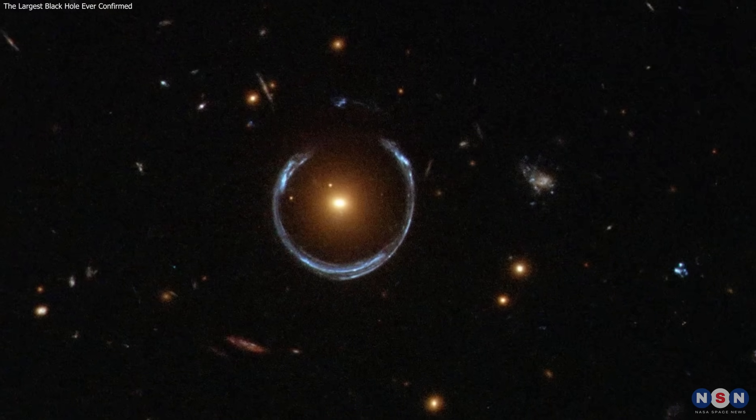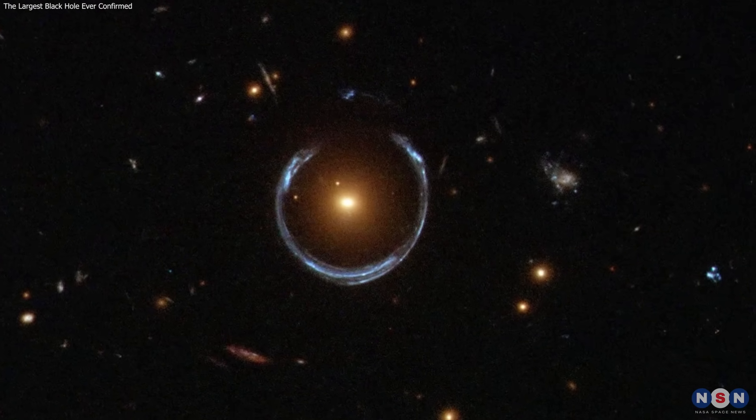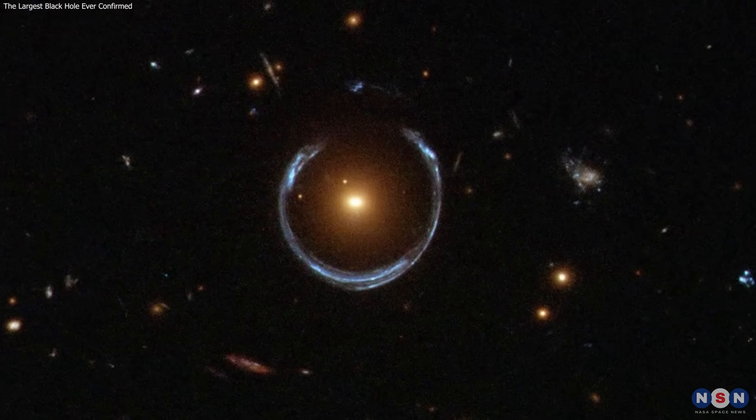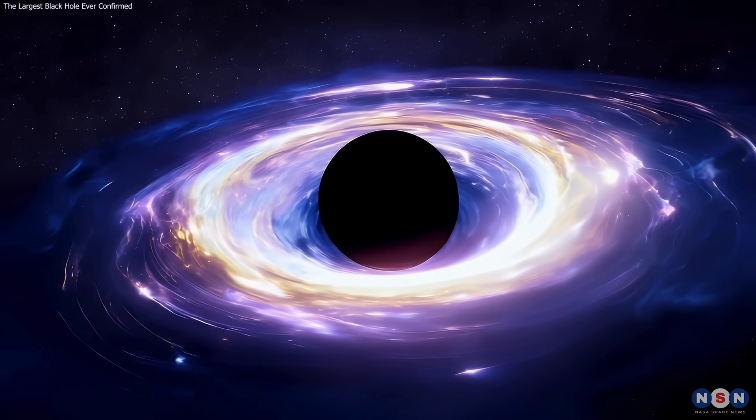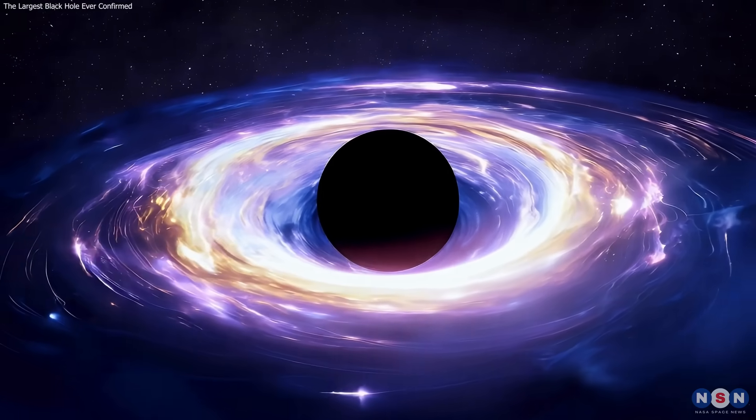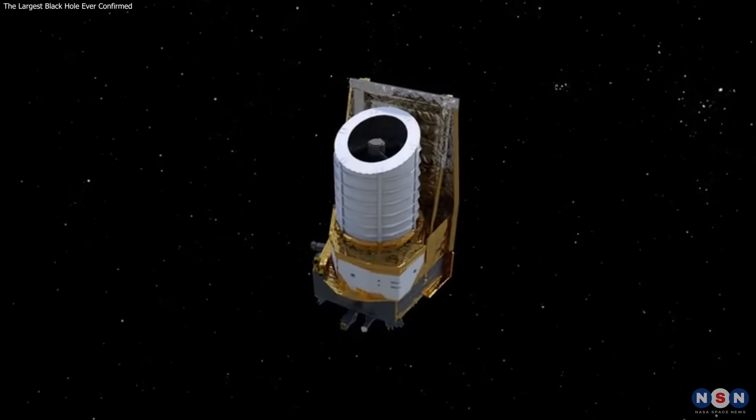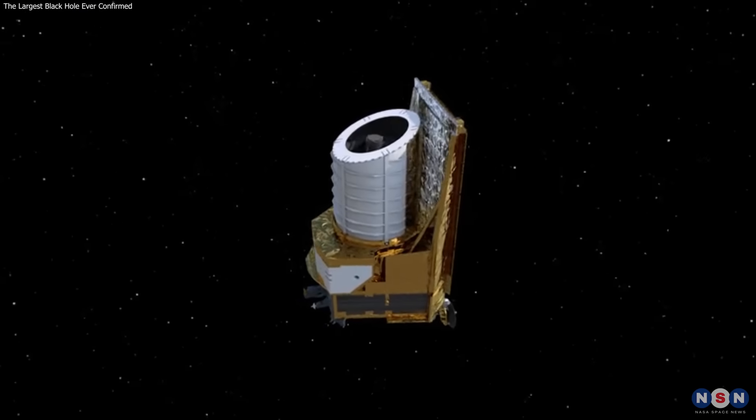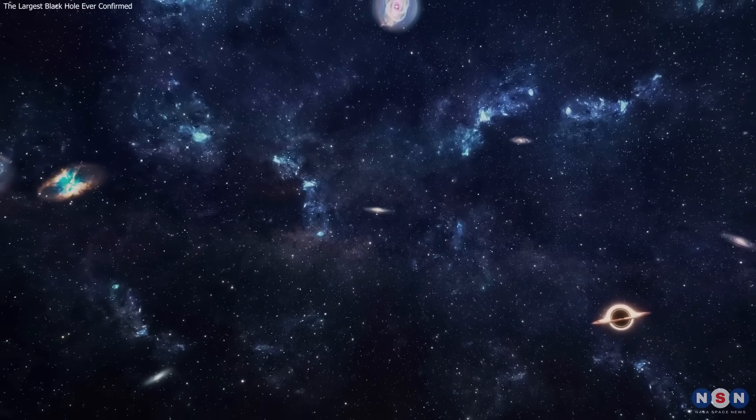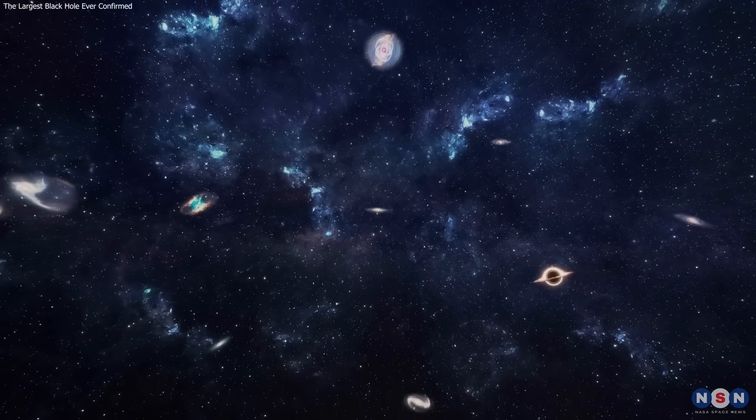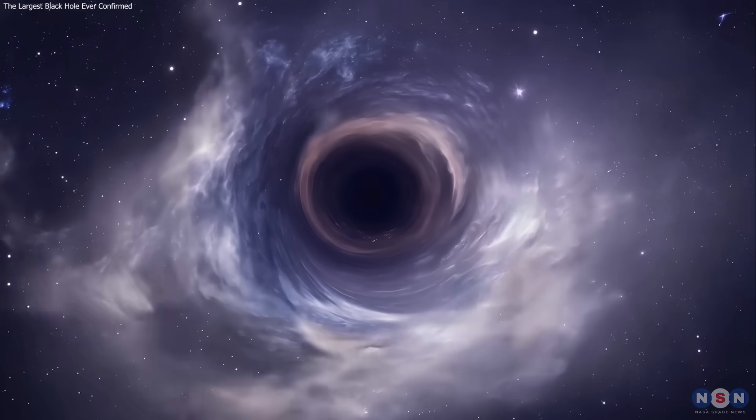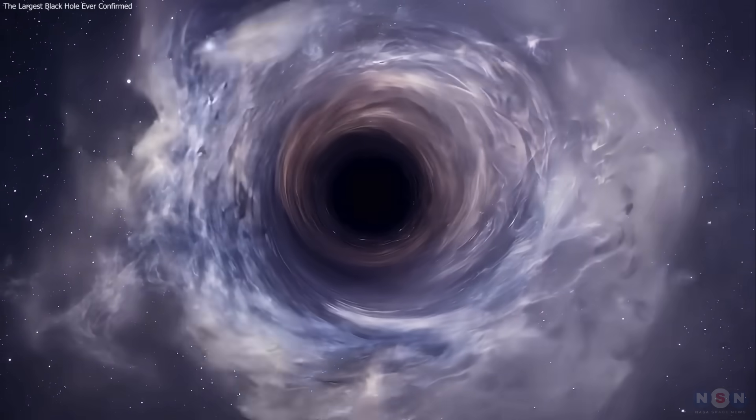The 36 billion solar mass black hole in the cosmic horseshoe marks a new milestone, challenging how we think these giants grow. With telescopes like Euclid, more discoveries are coming, and each one will reshape our view of the universe. Stay tuned, because the cosmos always has another surprise.